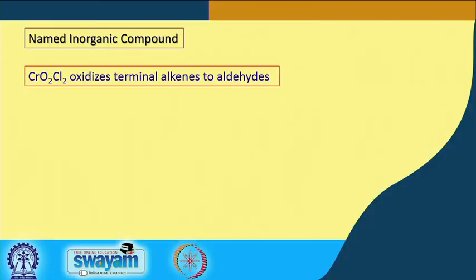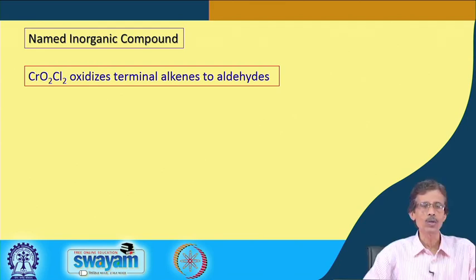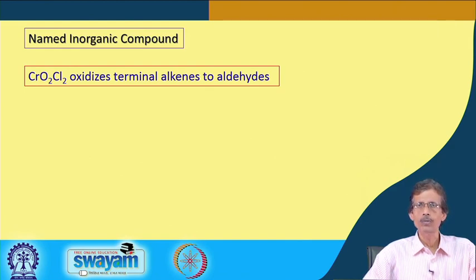Welcome back to this class, where we are talking about the usefulness of some named inorganic compounds. We have taken the example of chromyl chloride — CrO₂Cl₂. Chromyl chloride is a very useful compound from an analytical chemistry point of view.